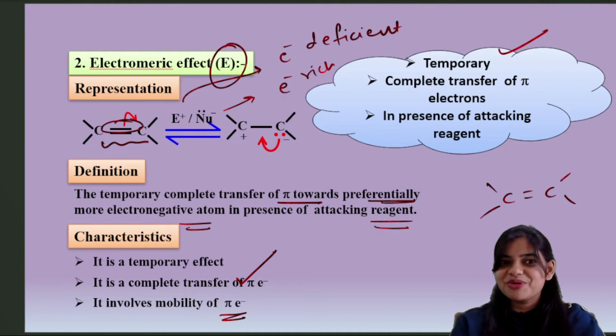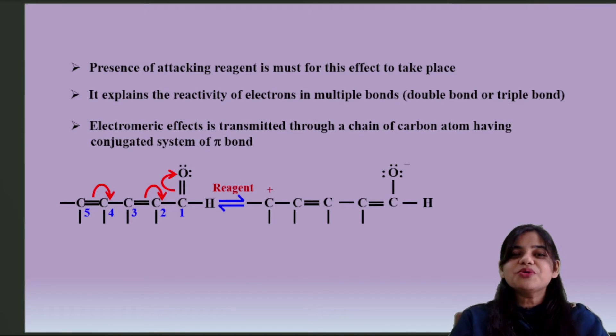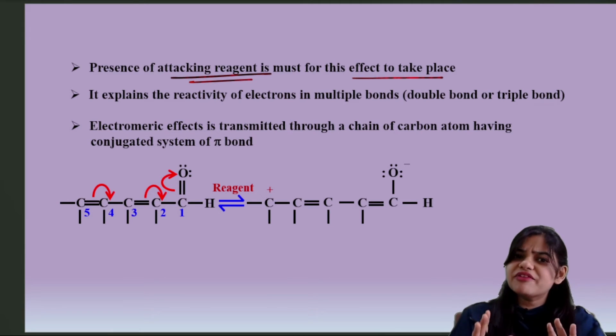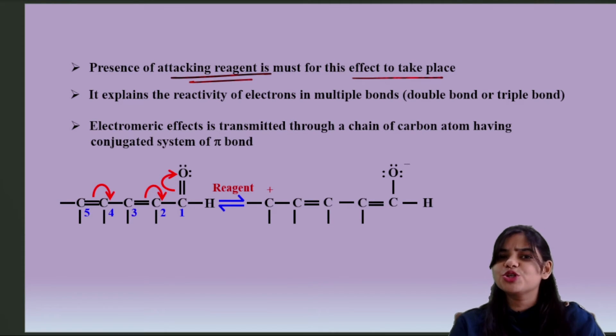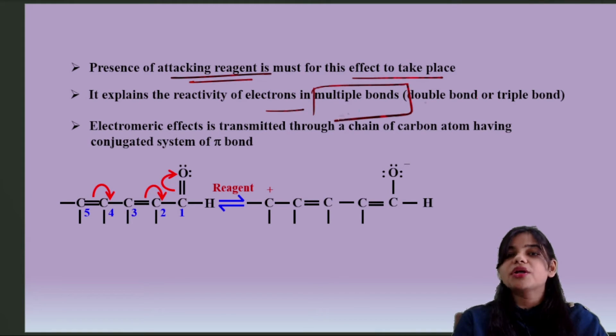So the presence of attacking reagent is must for this effect to take place. If no one is attacking, it will remain as it is, there is no distribution of charges. It explains the reactivity of electrons in multiple bonds, double or triple bond. And electromeric effect is transmitted through a chain of carbon atoms having conjugated pi bond system.